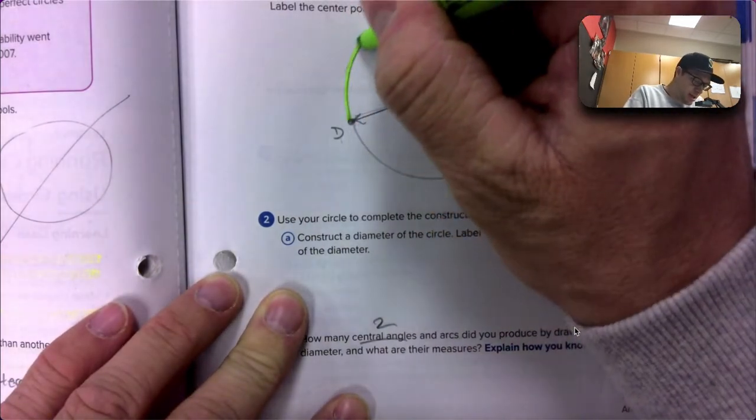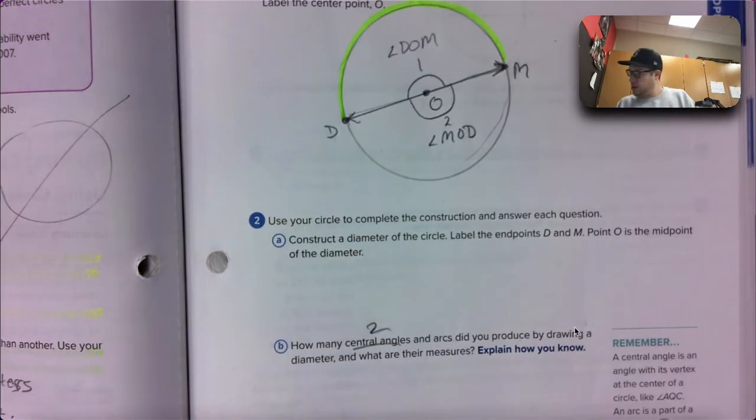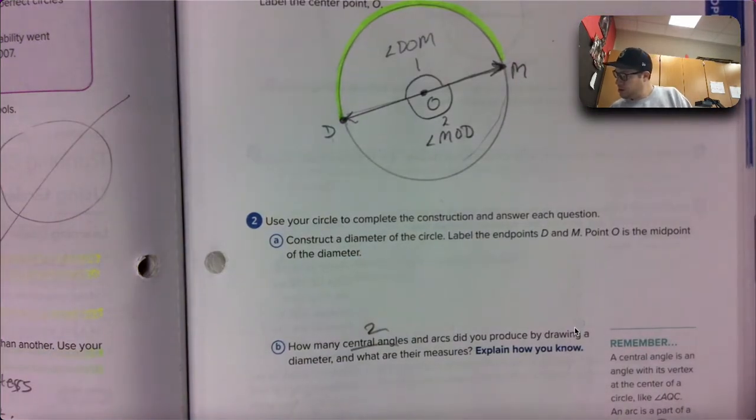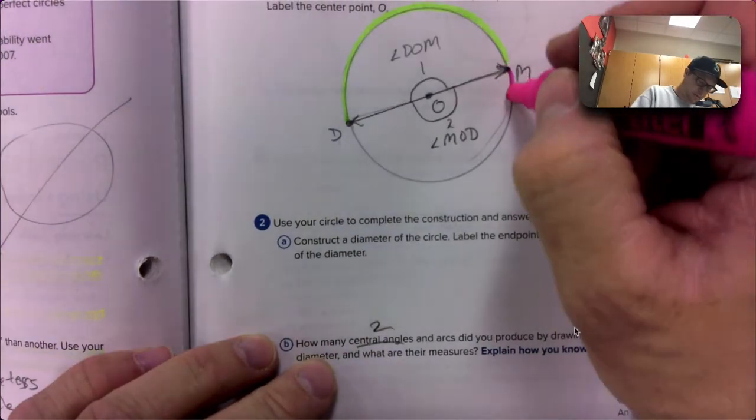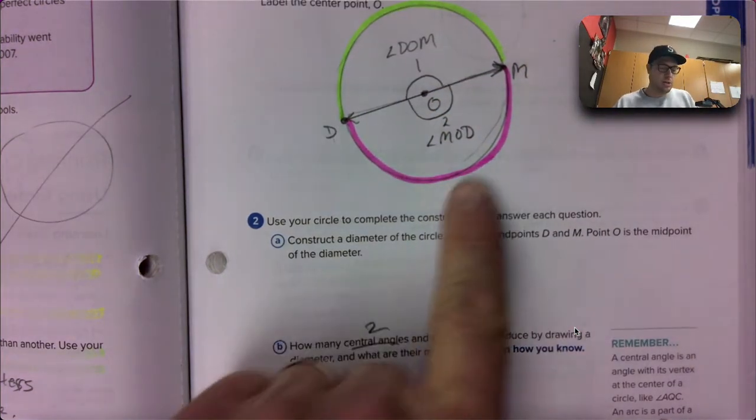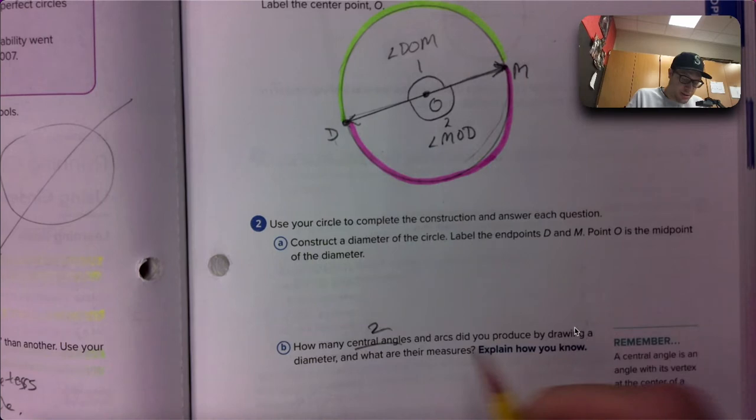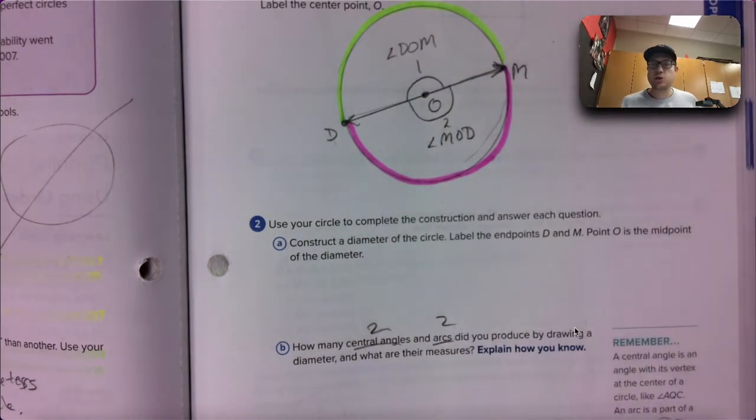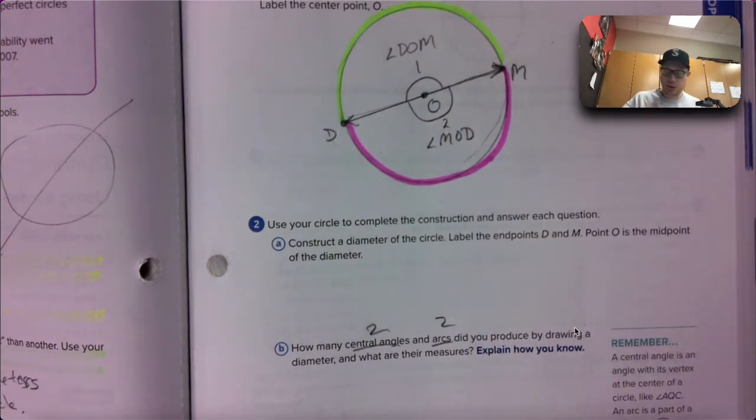Kind of looks like a pokeball. All right, so those two arcs. Those two arcs that we produced by drawing a diameter, a central angle, two central angles, two arcs. They're each measuring, let's see, all the way around a circle is 360 degrees. So halfway around a circle must be 180.